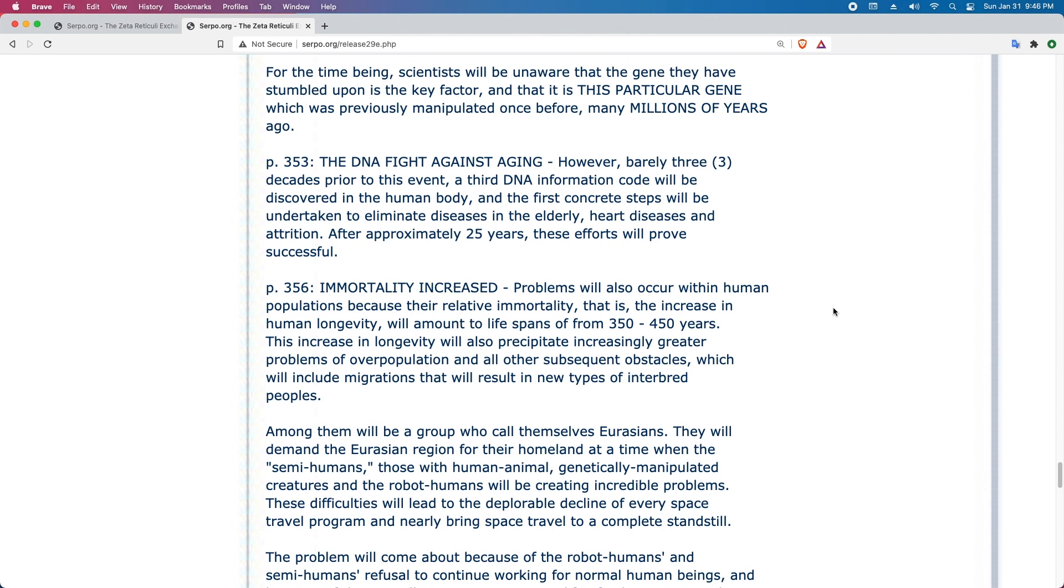Page 356. Immortality Increased. Problems will also occur within human populations because their relative immortality, that is, the increase in human longevity, will amount to lifespans of from 350 to 450 years. This increase in longevity will also participate increasingly greater problems of overpopulation and all other subsequent obstacles, which will include migrations that will result in new types of interbred peoples. Among them will be a group who call themselves Eurasians. They will demand the Eurasian region for their homeland at a time when the semi-humans, those with human-animal genetically manipulated creatures, and the robot humans will be creating incredible problems. These difficulties will lead to the deplorable decline of every space travel program and nearly bring space travel to a complete standstill.